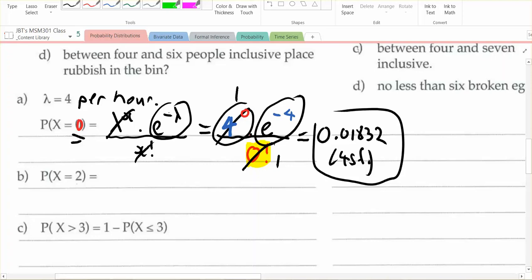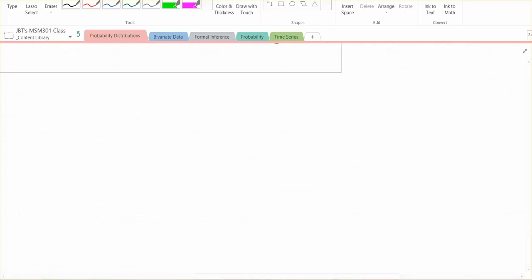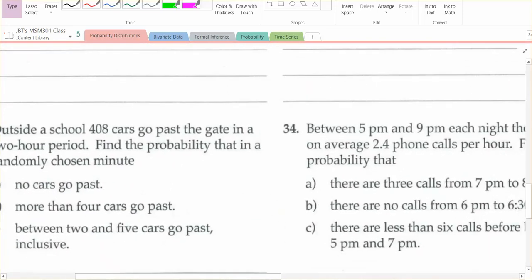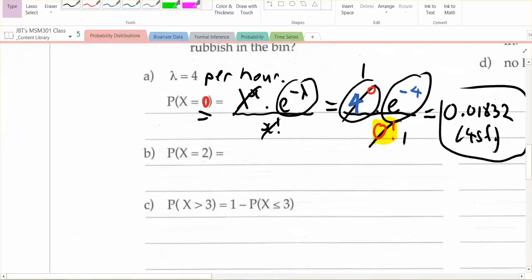And when we get to the inverse problems, and Mr. Howard's done a video of those, then that simplification is really important, because you have to know the probability of x being 0 in order to work backwards and do an inverse problem. So watch Mr. Howard's video on that one, and you'll find out how to do that. All the best.